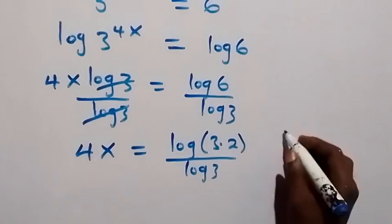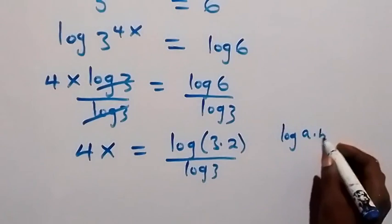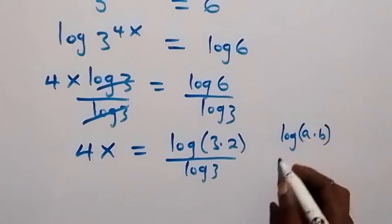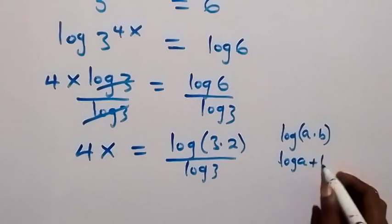When we apply the log of products, when we have log of a times b, we can separate it into two logs: log a plus log b.